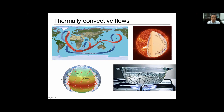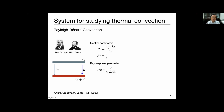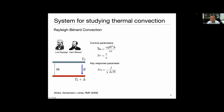To study these complicated convective flows, we use an idealized system called the Rayleigh-Bénard convection system. The system is simplified to two parallel plates with a fluid layer confined between them. We maintain the top plate temperature at T-naught and the bottom plate at a higher temperature, creating a temperature difference delta that drives the flow. The control parameters are the Rayleigh number, which measures driving strength essentially as a temperature difference, and the Prandtl number, which measures the fluid properties. The key response parameter is the Nusselt number, which measures heat transfer due to convection normalized by heat transfer due to conduction.